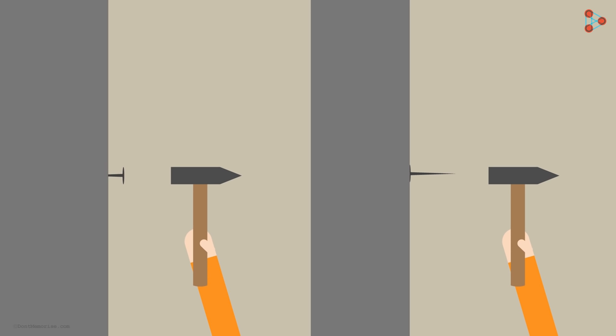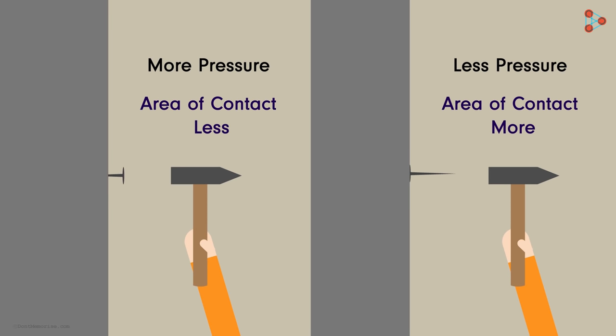If you notice, the tip of the nail has a very small area compared to the flat surface and hence the area of contact with the wall reduces to great extent in the first case. Hence the pressure applied by the tip on the wall is greater than the pressure applied by the flat surface. That is why it is easy for the tip of the nail to penetrate through the wall.